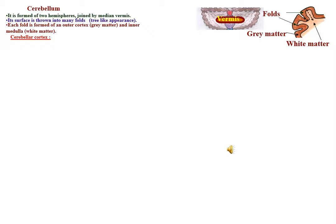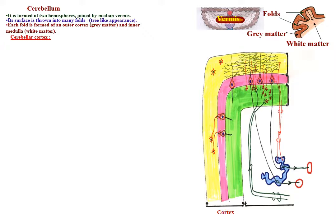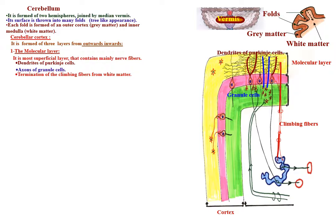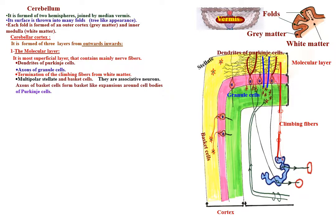The cerebellar cortex is formed of three layers. From outwards inwards, they are: the molecular layer, the most superficial layer, which contains mainly nerve fibers. It contains the dendrites of Purkinje cells, the axons of granule cells, the termination of climbing fibers from white matter, and multipolar stellate and basket cells, which are associative neurons. The axons of basket cells form basket-like expansions around the cell bodies of Purkinje cells.